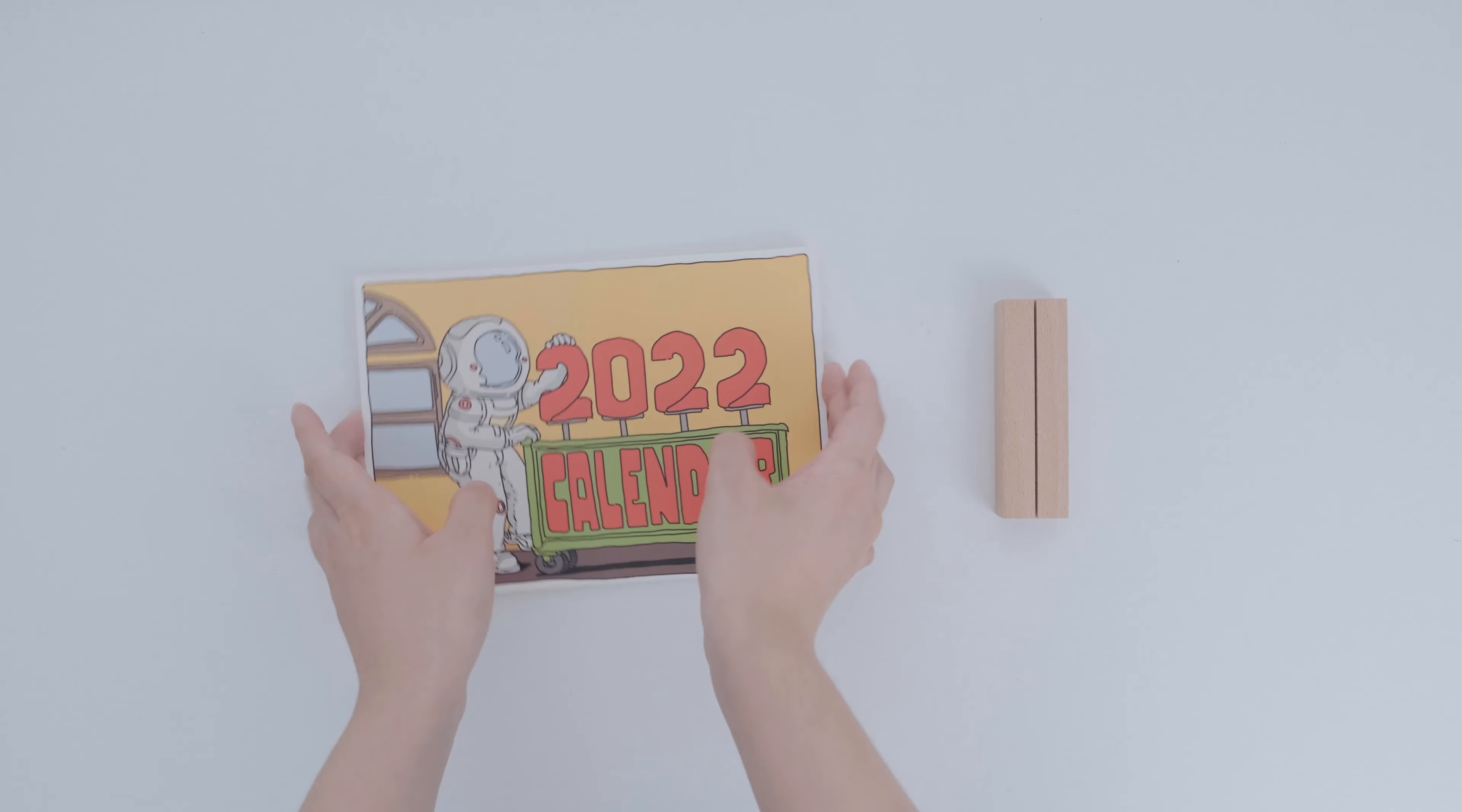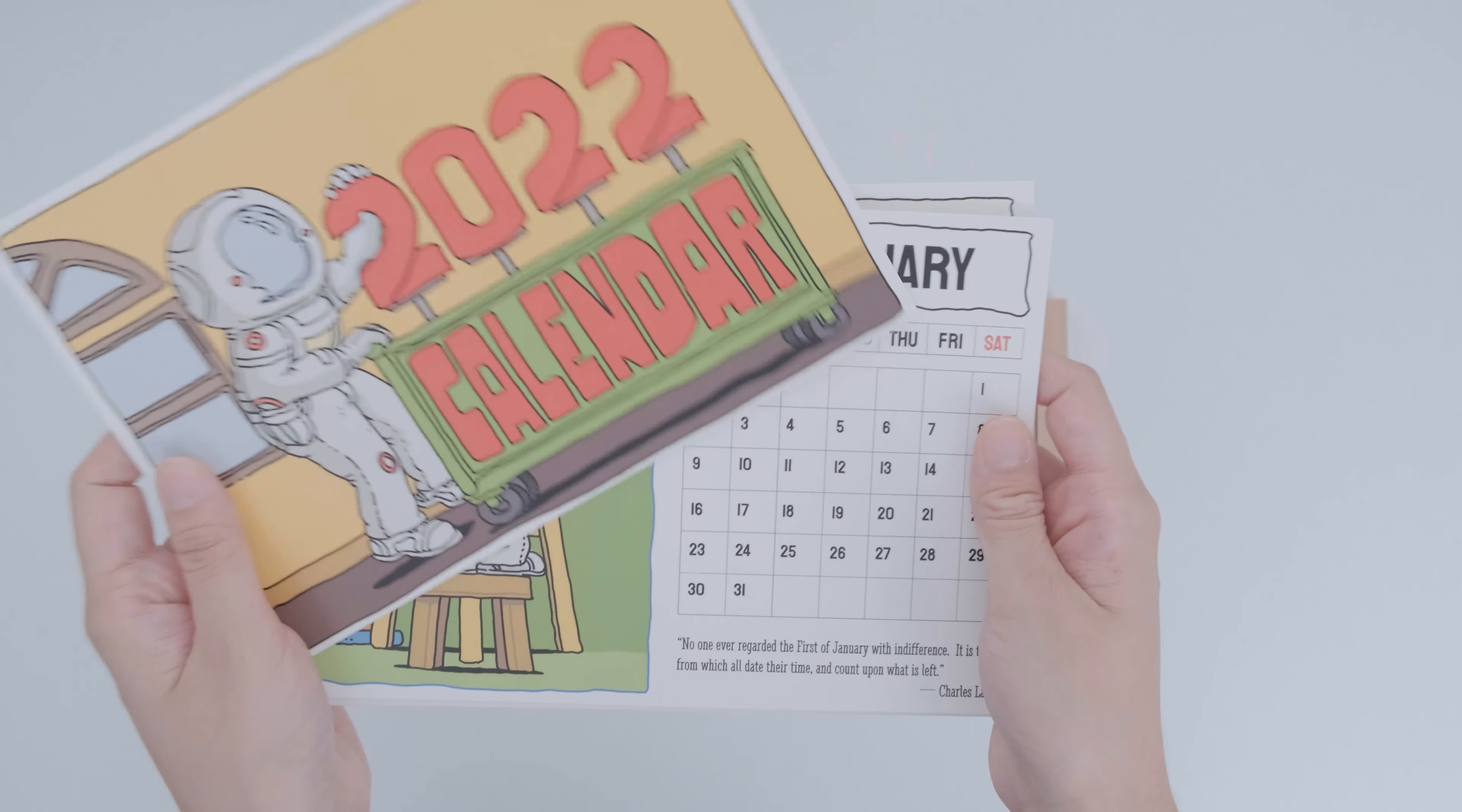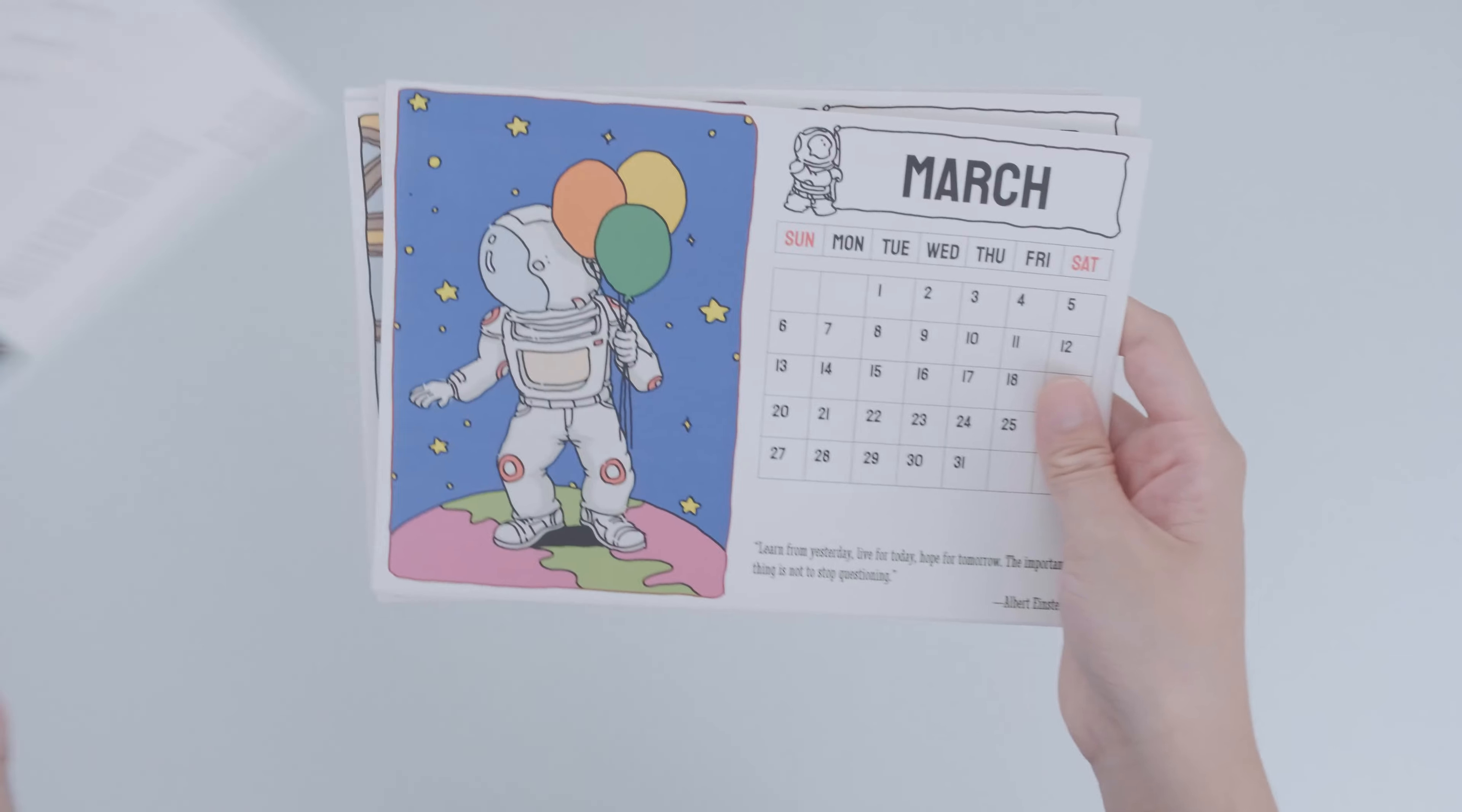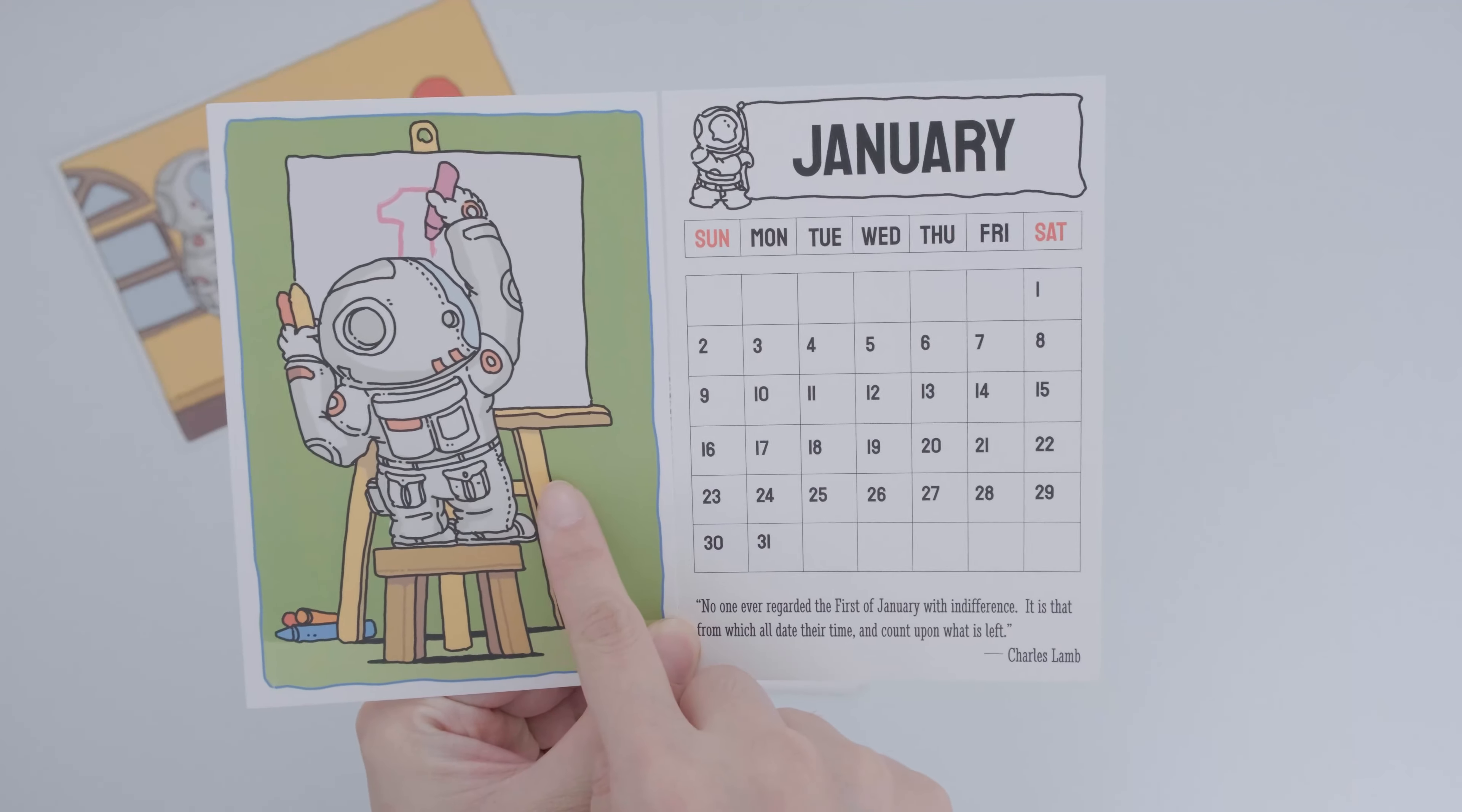First up is our 2022 Astronaut Calendar. In 2021, our astronaut traveled through the universe for an entire year. Now he's finally back. Back on Earth, he decided to continue to have fun. Why should we take life too seriously? Let's try to continue to find the meaning of life and happy everyday life.